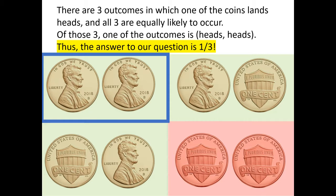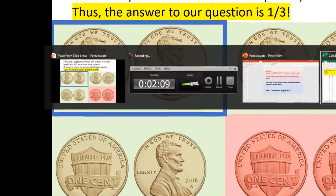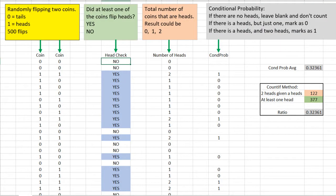So perhaps a strange and counterintuitive result with coin flips: the answer is not one half, the answer is not one fourth, but the answer is one third. Now I can also show this to you in an Excel spreadsheet with a coin flip simulation.